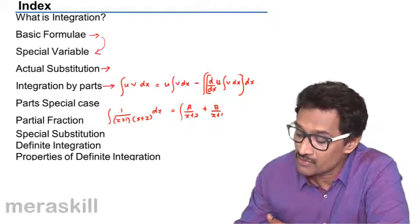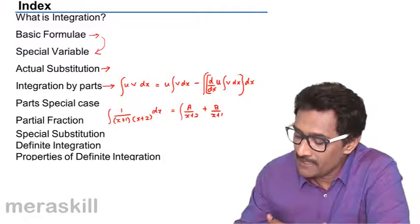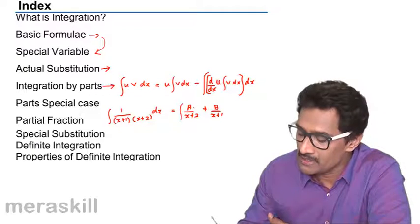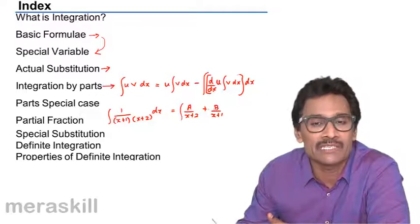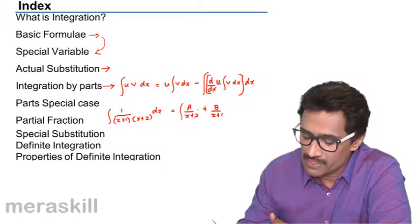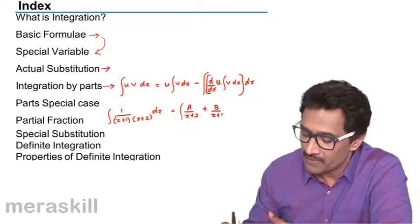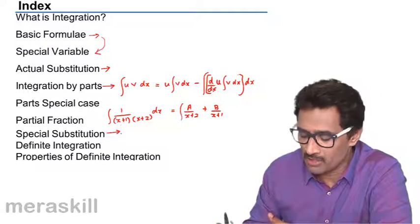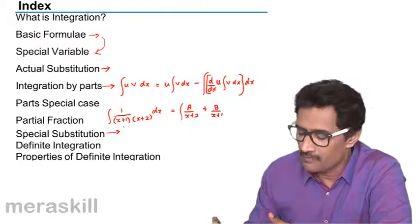Or a upon x plus 1, and then try to simplify this and equate the expression with 1 and find the values of a and b, so that you get two simple linear functions which can be converted into this. Then you have certain formulae for special substitution.